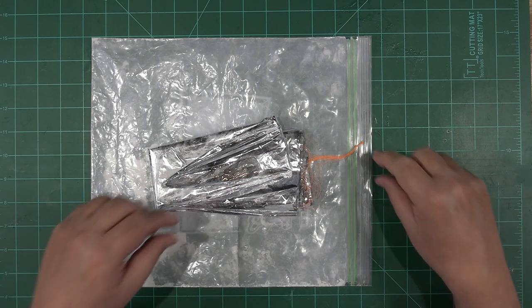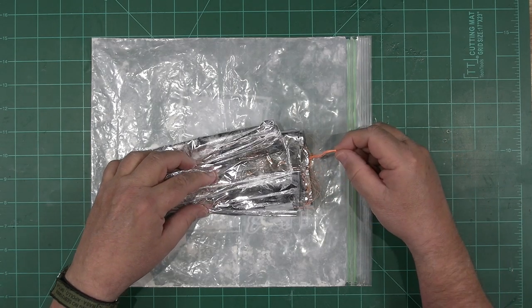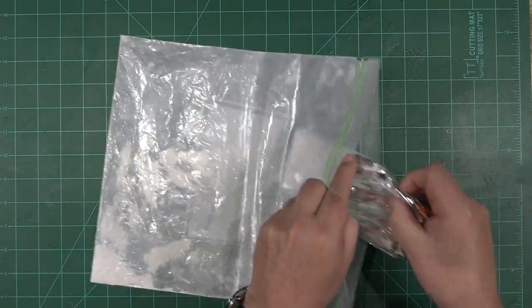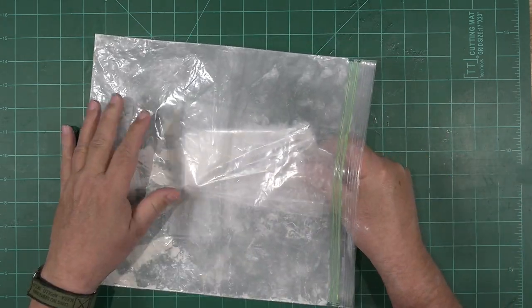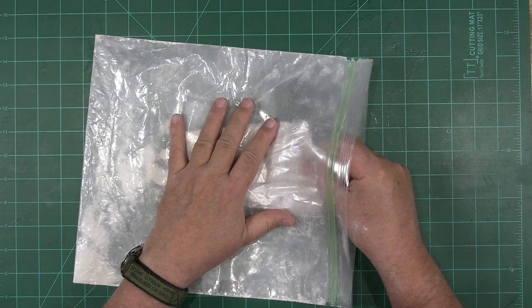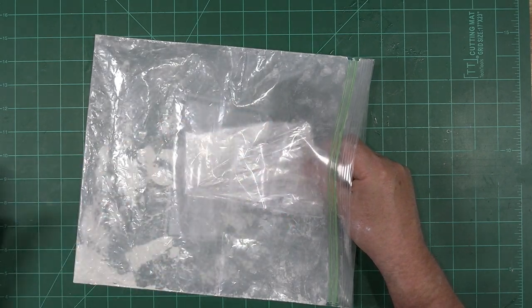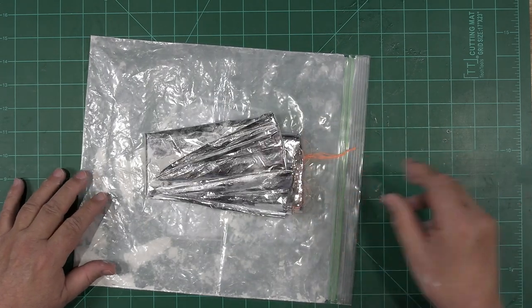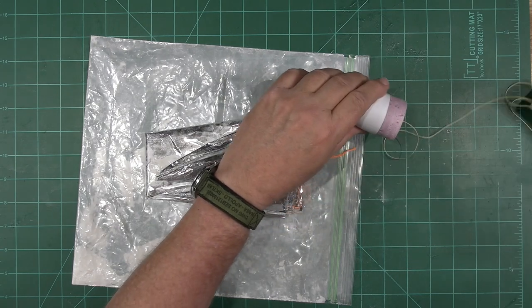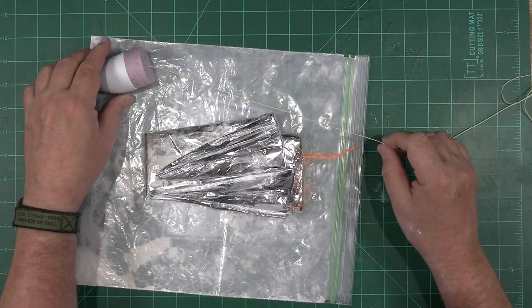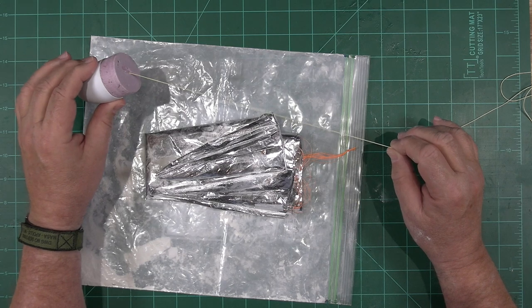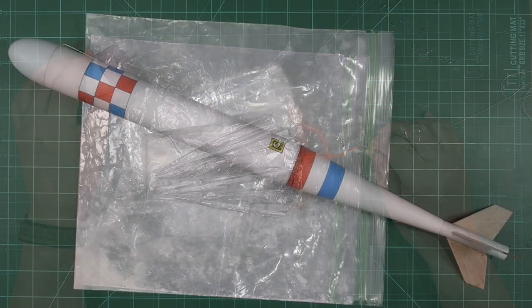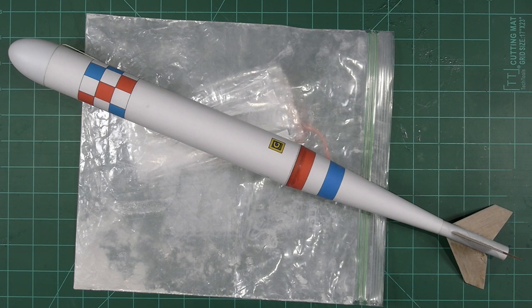Once we've attached all of our shroud lines, we'll gather them and tie a small knot in the end of the bundle. I like to store my finished parachutes in ziplock bags filled with a bit of talcum powder. The talcum powder is a simple dry lubricant, and it helps keep things from sticking to each other. When it's time to fly, I pull the bundle out of the bag and tie it to the shock cord at a point about 1 foot or 300 millimeters away from the end of the nose cone. With that, we're all done and ready to go flying.